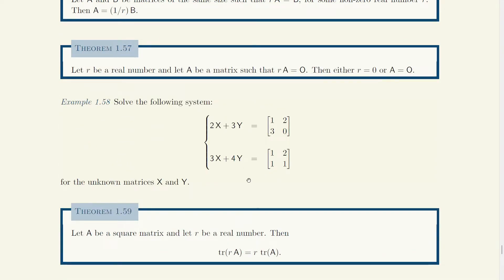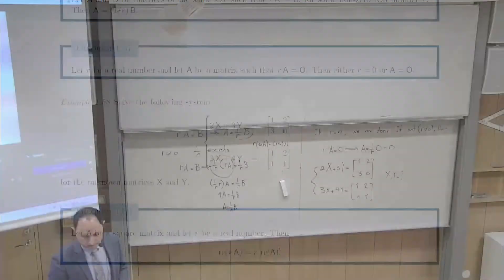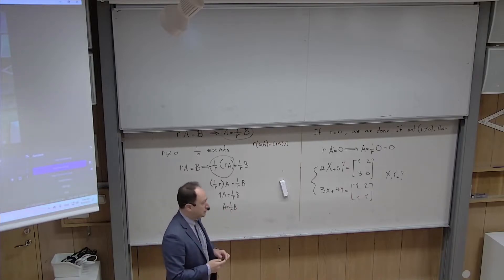I've given you a very simple exercise. If you want to solve a system of matrix equations, you can usually just do it normally, because everything we learned is very natural — whatever you were able to do with normal numbers you can also do with matrices. So: 2X plus 3Y equals the 2×2 matrix [1 2; 3 0], and 3X plus 4Y equals [1 2; 1 1]. We are supposed to find the 2×2 matrices X and Y.